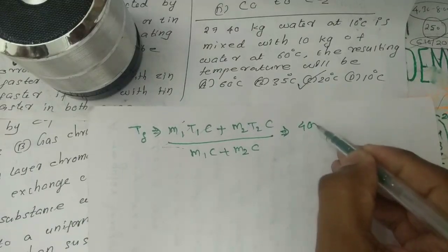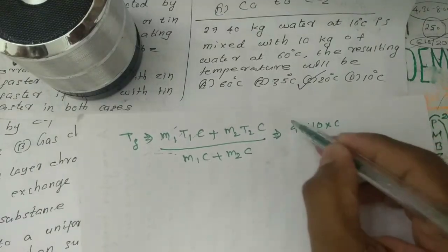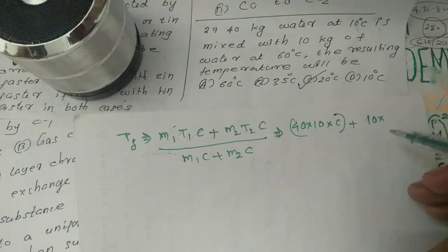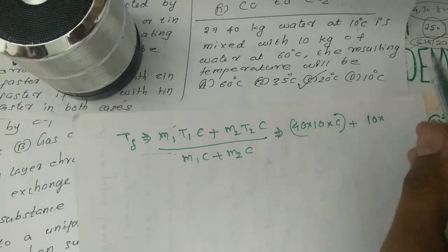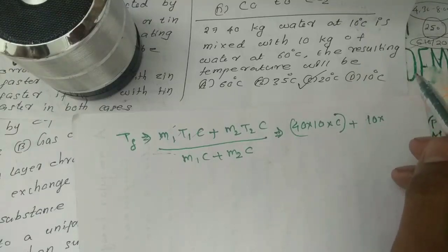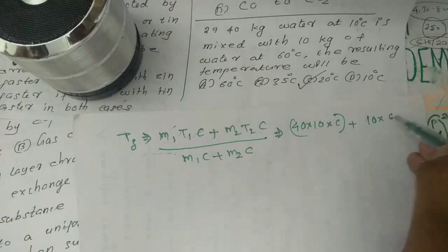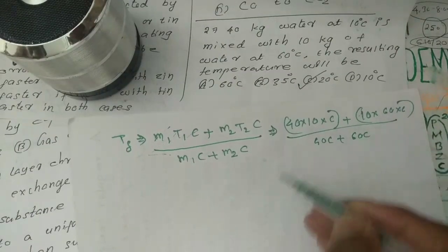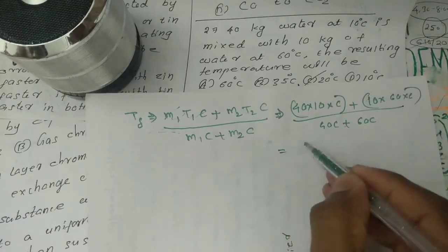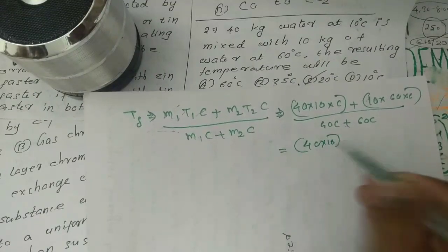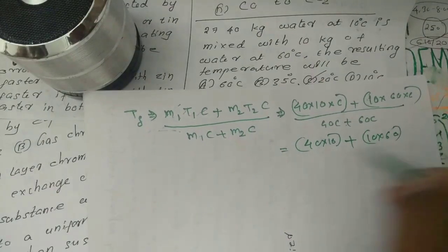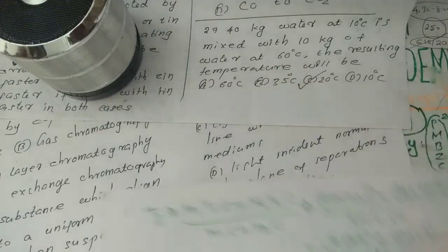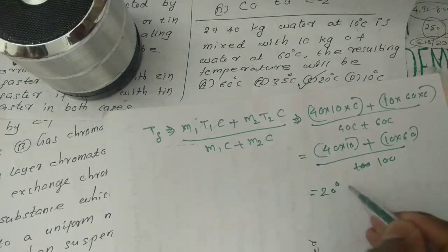Substitute m equal to 60 into the equation, where c is specific heat capacity and m2 is 10. The expression becomes c divided by 40c plus 60c. Simplifying: 60 divided by 45 into 10 equals 100. The result simplifies to 23°C.